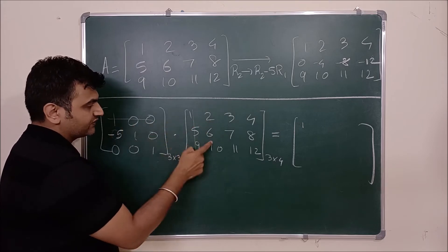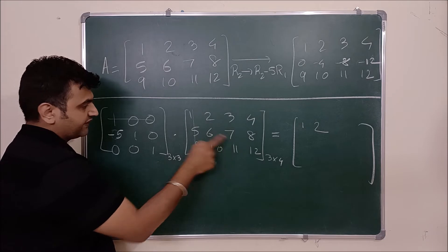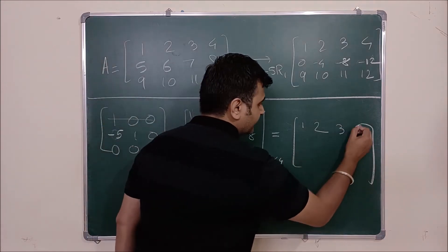1 into 2, 0 into 6, 0 into 10. 1 into 3, 0 into 7, 0 into 11. And then 4.